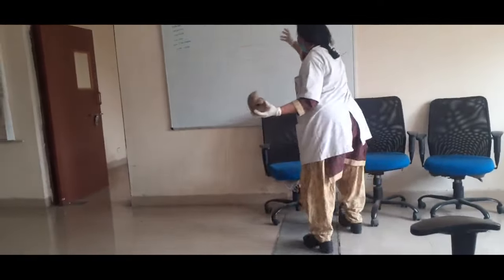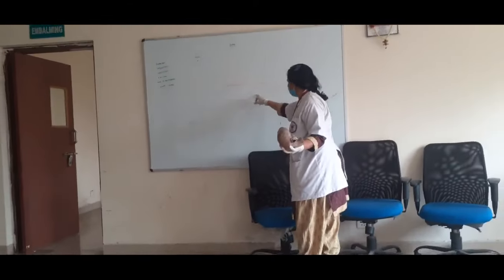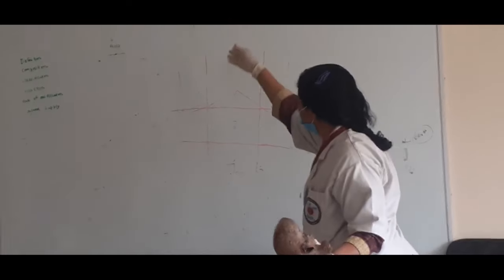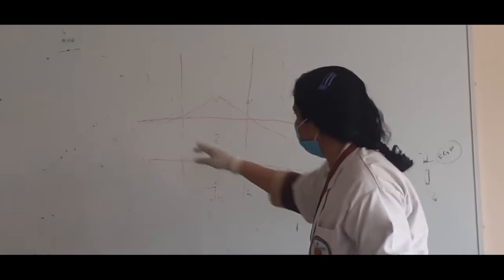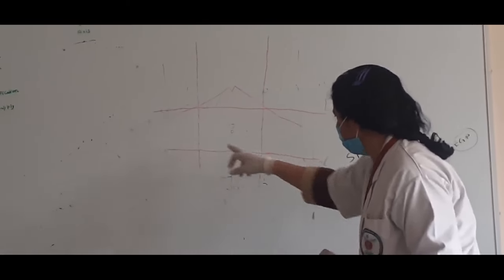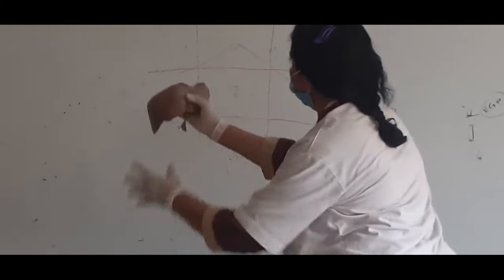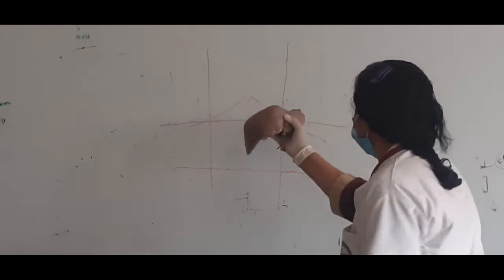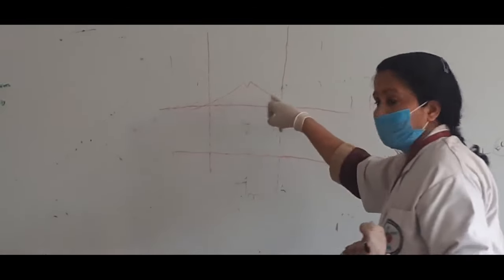Here you can see the quadrants: the right hypochondrium, epigastrium, left hypochondrium, right lumbar, umbilical, left lumbar, right iliac, inguinal, and left iliac. On the basis of two vertical and two horizontal lines — the vertical lines passing through the mid-clavicular line, and horizontal lines passing through the tip of the ninth costal cartilage and the inter-tubercular plane — the liver lies in the right hypochondrium, epigastrium, and a small part coming up to the left hypochondrium. These three quadrants.